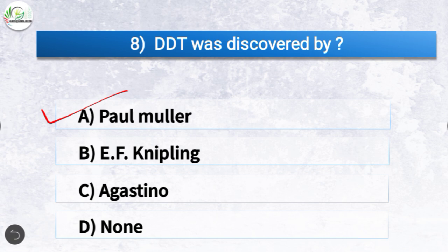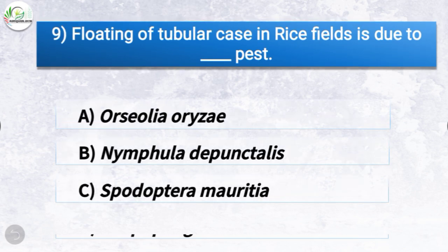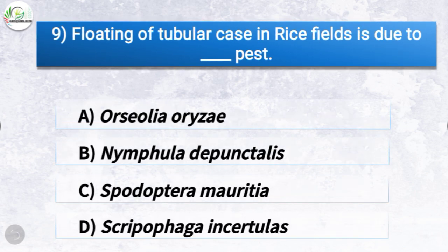Question number nine: floating of tubular case in rice fields is due to which pest? The options are Orseolia oryzae, Nymphula depunctalis, Spodoptera mauritia, or Scirpophaga incertulas. The correct answer is option B, Nymphula depunctalis, which is the rice case worm. So floating of tubular case in rice fields is due to Nymphula depunctalis.